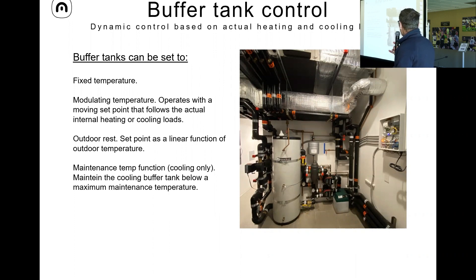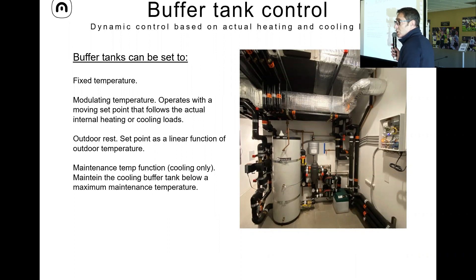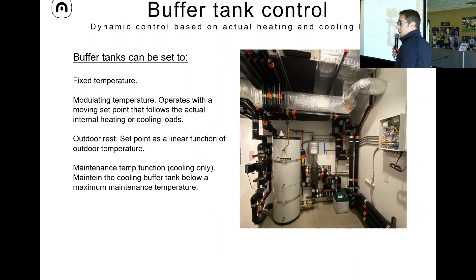There are different ways to control the buffer tank temperature. Fixed temperature — you keep it at 10 degrees for cooling, or with a four-pipe system at 10 and 40 degrees for heating and cooling. But the way I like to control it is with modulating temperature, which allows you to optimize heat pump performance. The modulation is based on internal heating and cooling loads — we estimate the real loads in every single room, and that dictates the real temperature needed in the buffer tank. There is also an outdoor reset function based on a set point and outdoor temperature.